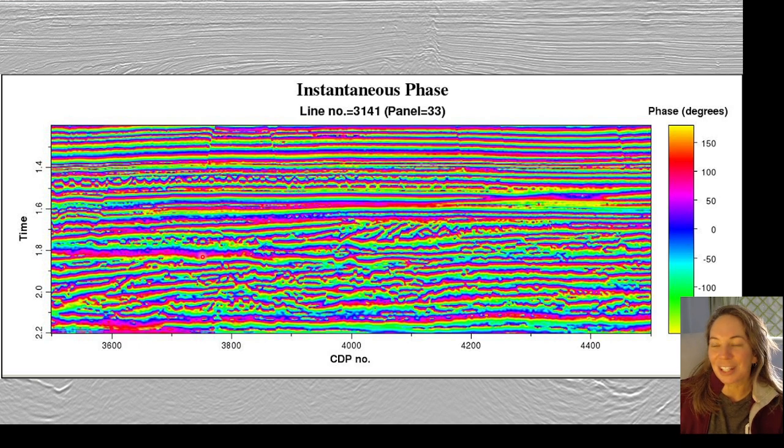What's great about instantaneous phase is it really highlights the continuity of events, regardless of what the amplitude is, so it's kind of taking out all that amplitude information that can distract us. And so it brings out the really subtle stratigraphic features that can be harder to see.